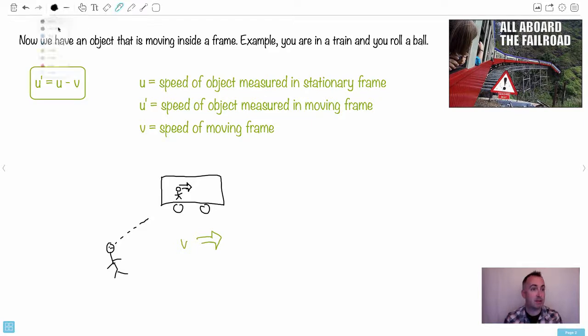v is going to be the speed of the moving frame. In other words, in this case, v is the speed of the train in meters per second. Now u prime, that's going to be the speed of the object measured in the moving frame. In other words, if I'm sitting in this train, this is u prime. So u prime will be the speed of you walking with respect to you in the train.